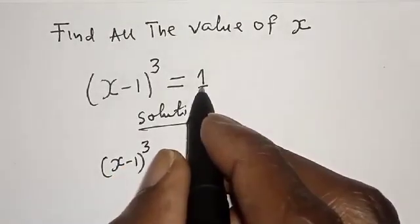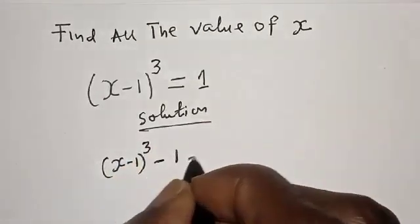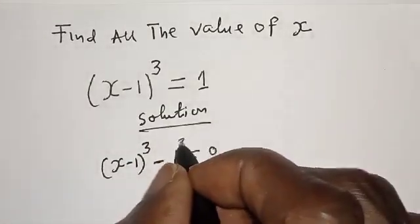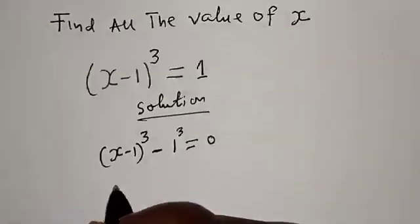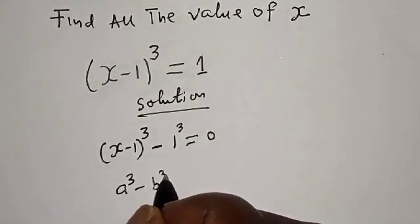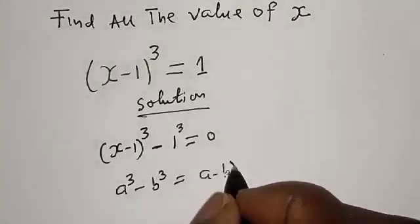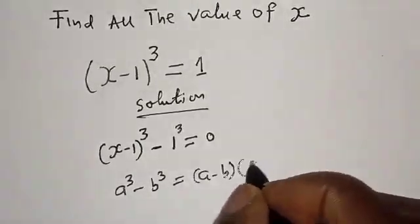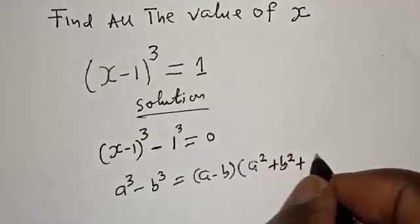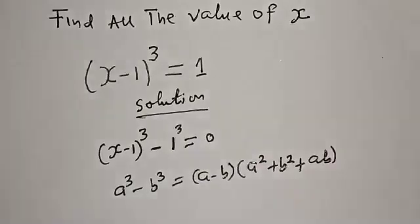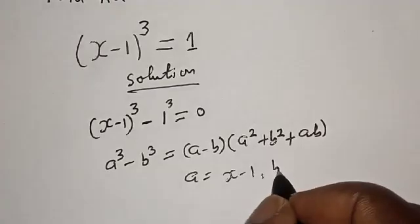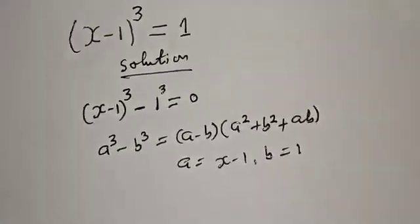We have (s-1) raised to power 3. If you bring the 1 to this side it becomes minus 1, equal to 0, and this is also 1 raised to power 3. Take note of this rule: if you have a³ minus b³, this is equal to (a - b)(a² + b² + ab).